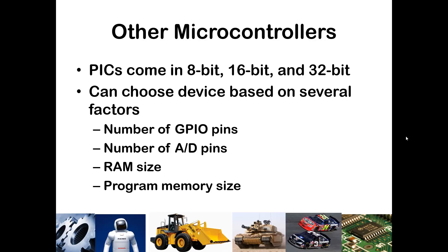You might also consider the memory size you have available, both the RAM and the program memory. If you're writing very extensive code, the 8,192 bytes of program memory on this PIC will get eaten up rather quickly. Think about writing a detailed robotics program or a microcontroller system for some automated driving—you'll need more storage space to hold that. Also, the RAM size determines how many variables you can have and the types of variables, so that is an important consideration as well.